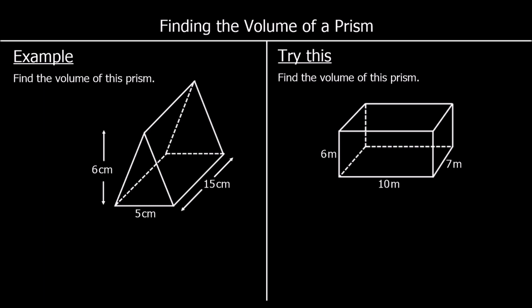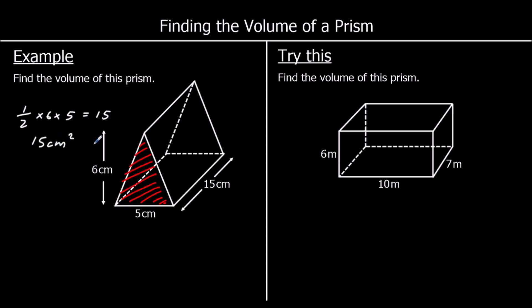The volume of a prism is the area of the shape on the front times how far back it goes. The area of a triangle is half base times height, so that's half of 6 times 5, which is 3 times 5, which is 15. The area of the shape on the front is 15 centimeters squared, then we multiply by how far back it goes. The volume is 15 times 15, which is 225 centimeters cubed.